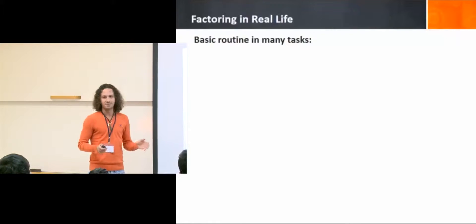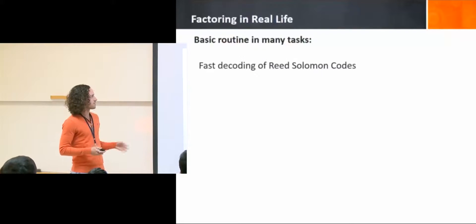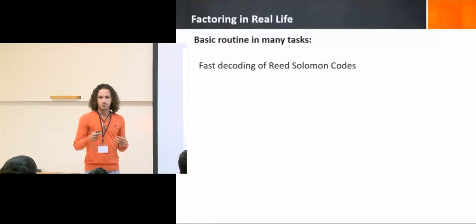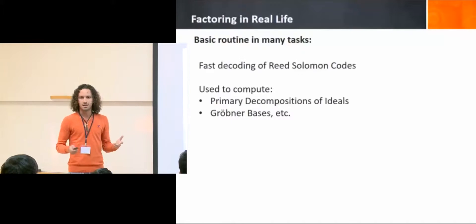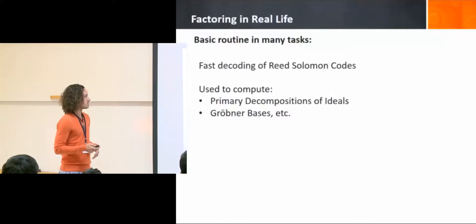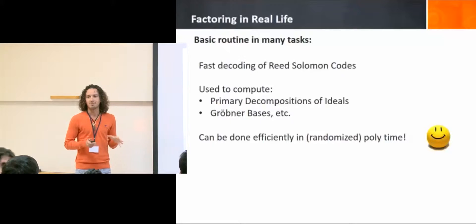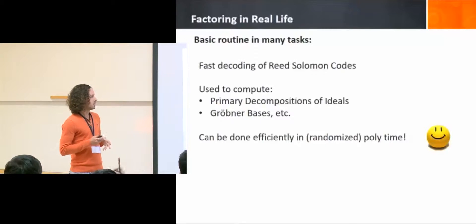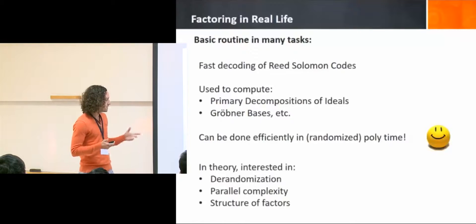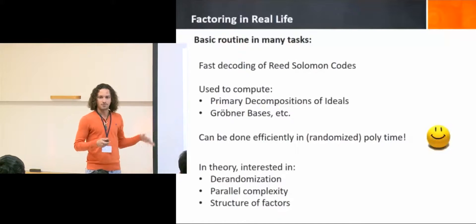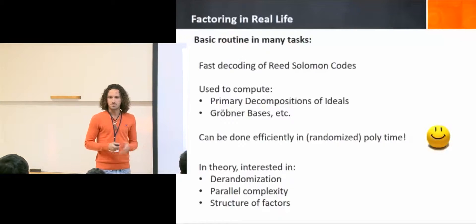So, factoring in real life. Factoring is a basic routine in many tasks. The one that we all know from complexity is, for example, used in fast decoding of Reed-Solomon codes. But it's also used to compute primary decompositions of ideals, Gröbner bases, and lots of other things in computer algebra. The good news is that it can be done efficiently in randomized polynomial time. As complexity theorists, we want to understand a little bit more about factoring.